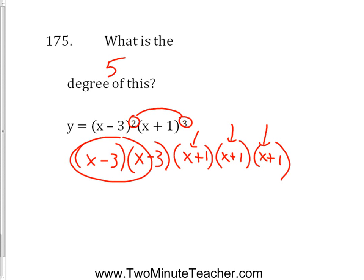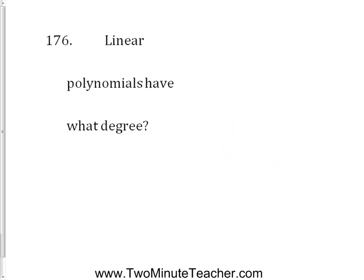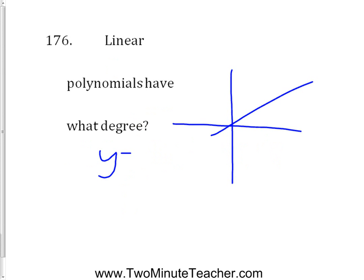Linear polynomials have what degree? Well, linear means they're going to be straight — a straight line is linear. Those are the simplest ones we learned back in middle school, like y equals x plus 2. Anything that has a degree of 1 will be linear. There's a little 1 there we kind of ignored when first learning x and y, but that degree of 1, first degree, is linear.